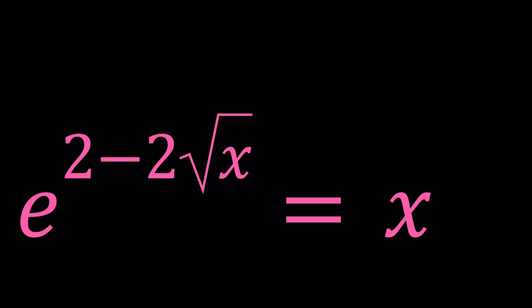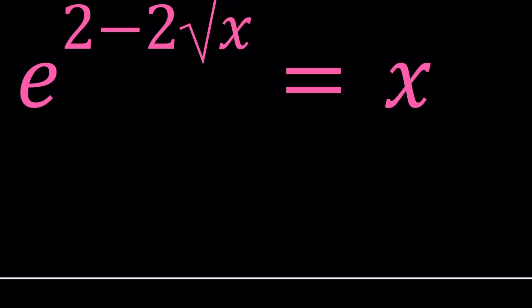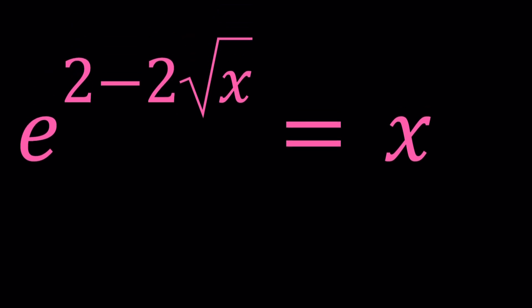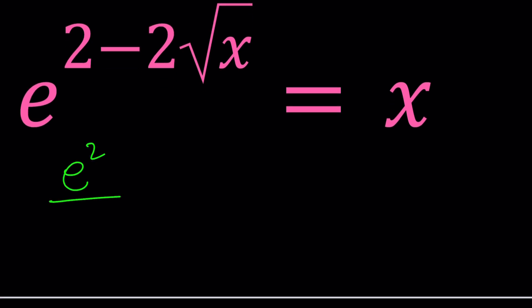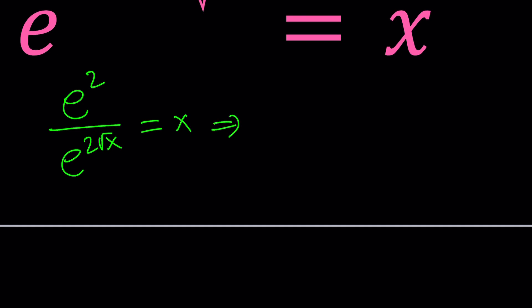So let's go ahead and start by separating the expressions. We can go ahead and write this as e to the second power divided by e to the power 2 root x and that is equal to x. And then I'm going to go ahead and multiply both sides by e to the power 2 root x. So it's going to be like this and I want to write the x first. x times e to the power 2 root x equals e squared.